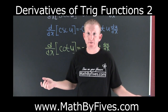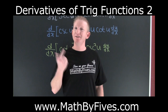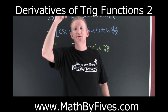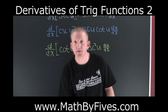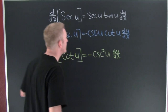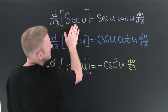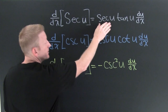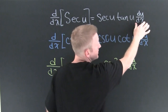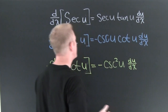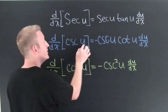Now we're talking about the derivatives of the non-big-three — not sine, cosine, tangent, but secant, cosecant, and cotangent. The derivative with respect to x of secant of u is secant of u times tangent of u times du/dx, using the chain rule. The derivative of cosecant of u is negative cosecant of u times cotangent of u times du/dx.